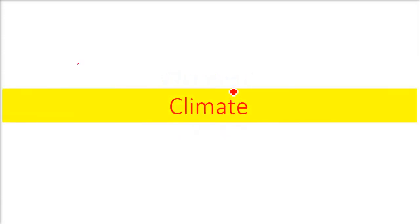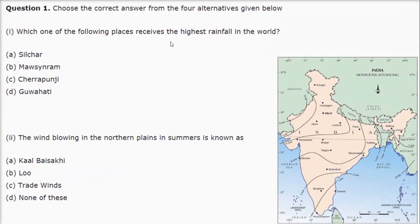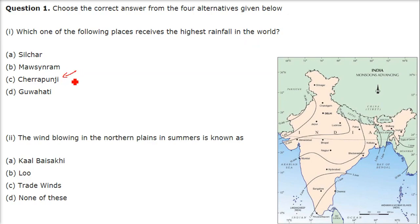Question and answer on climate. First is the objective type question. Which one of the following places receives the highest rainfall in the world? Cherrapunji remained the place of highest rainfall in the world for a long time, but now it's Mawsynram. So it's near to Cherrapunji, but the answer is Mawsynram.